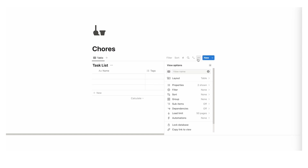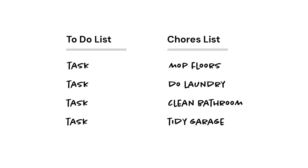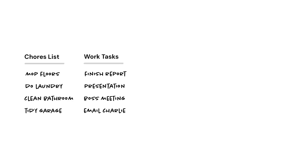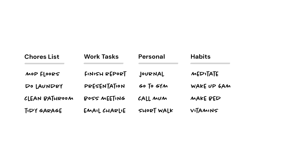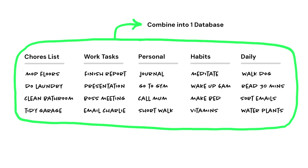The biggest mistake people make is thinking they need a separate to-do list for their chores. A lot of people have a task list for chores, a task list for work, for personal, for habits, their daily stuff — all of this. Having everything in separate databases makes it a lot more confusing.